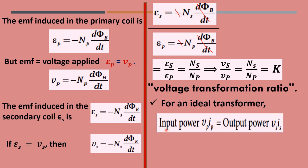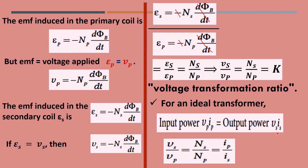For an ideal transformer, input power equals output power. Since power is V times I, input power Vp × Ip equals output power Vs × Is. This can be rewritten as Vs/Vp = Ip/Is. Since we know Vs/Vp = Ns/Np = k, we can use this relationship to analyze both types of transformers.